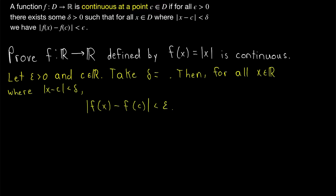From there, our proof will look something like this. We'll take delta to equal something that's going to work. Then we'll have that for all elements of our domain — for all x in the real numbers — where x is within delta of the chosen point c, we have that the absolute value of f of x minus f of c is less than epsilon. This is the form that our proof will take.